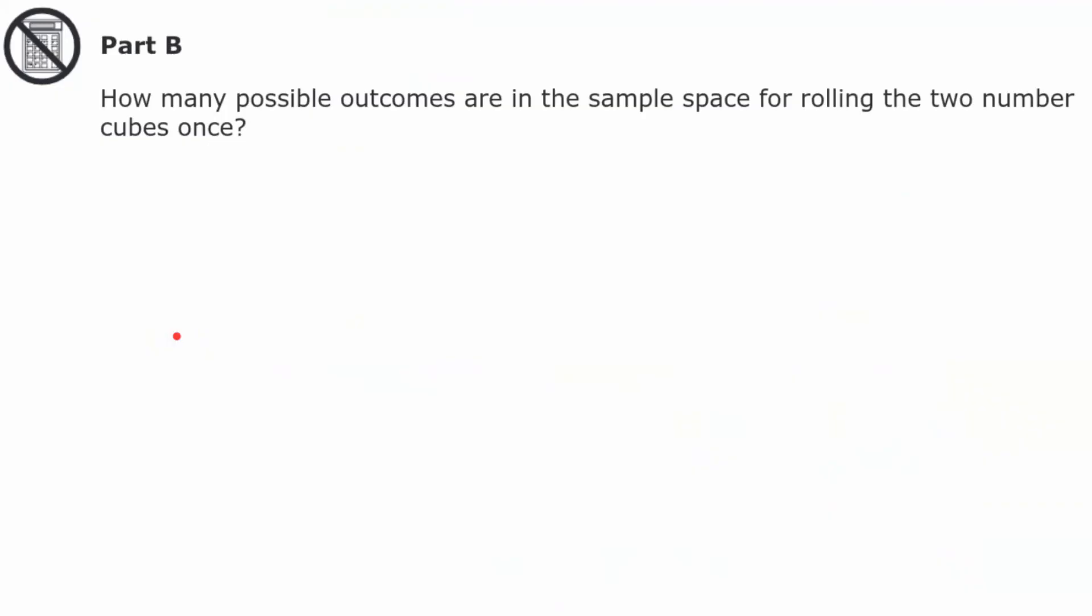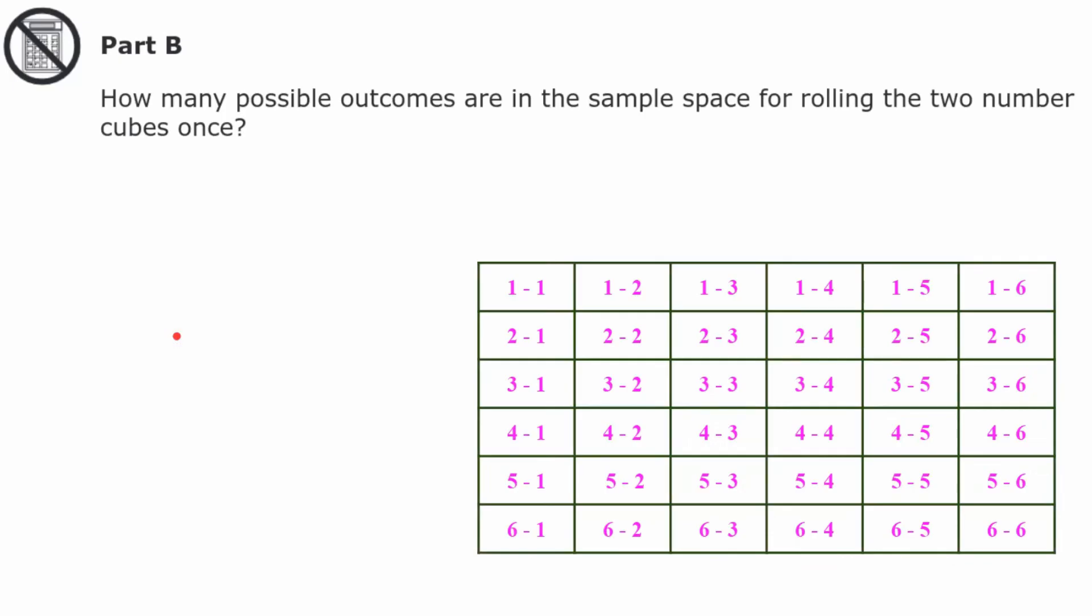Part B, how many possible outcomes are there in the sample space for rolling the two number cubes? Please pause and come back when you're ready. Welcome back. So I referred back to my sample space and I identify that there are 36 different possible outcomes. If you count up each one of these squares, they're 6 by 6, there's a total of 36 different outcomes.